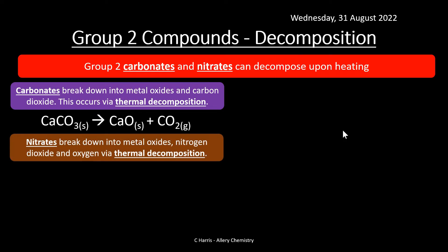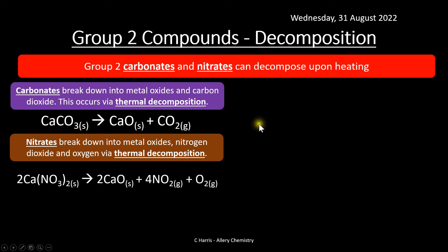Nitrates break down to form metal oxides, but they produce nitrogen dioxide and oxygen rather than carbon dioxide. For example, calcium nitrate forms calcium oxide plus nitrogen dioxide plus oxygen. This is also thermal decomposition — we're putting heat in to break these compounds down.